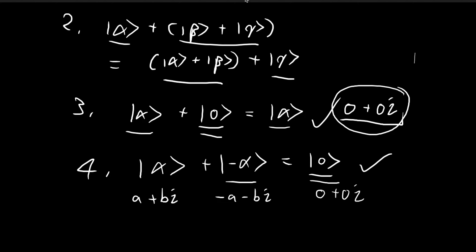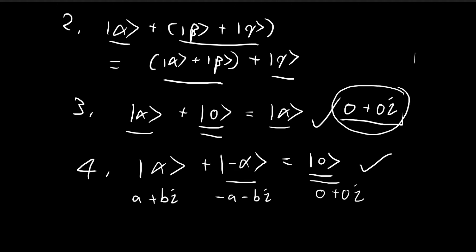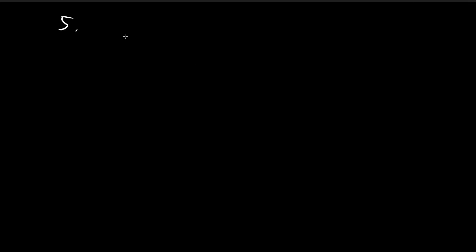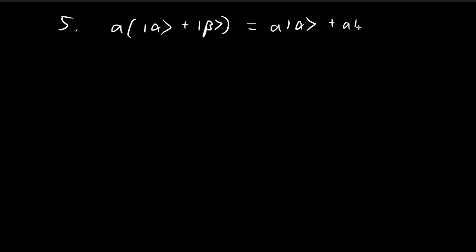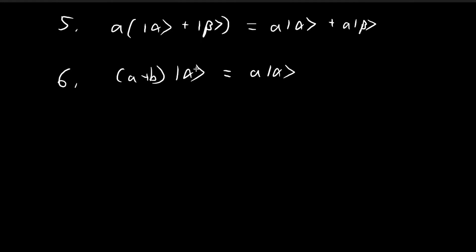So far we've gone through four axioms. The next four are related to scalar multiplication. The fifth axiom concerns the distributive property: you can distribute scalars among vectors — c(alpha + beta) = c·alpha + c·beta. The sixth axiom is also distributive: you distribute vectors through scalars — (a + b)·alpha = a·alpha + b·alpha. You can check both are true for the set of all complex numbers.